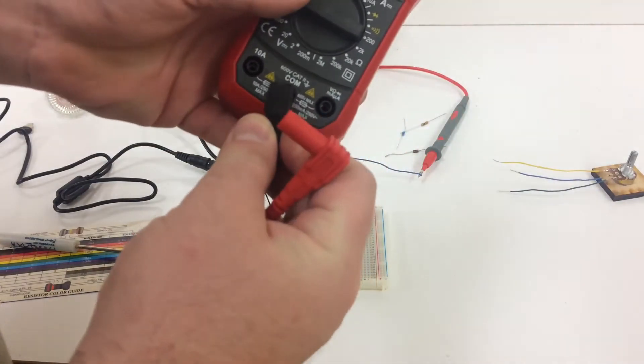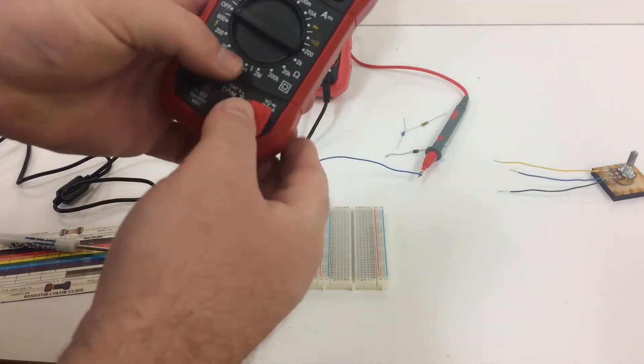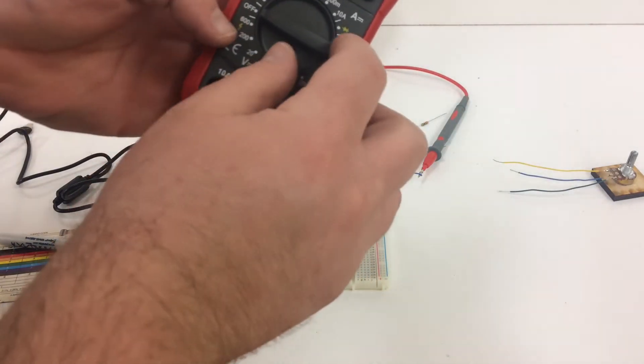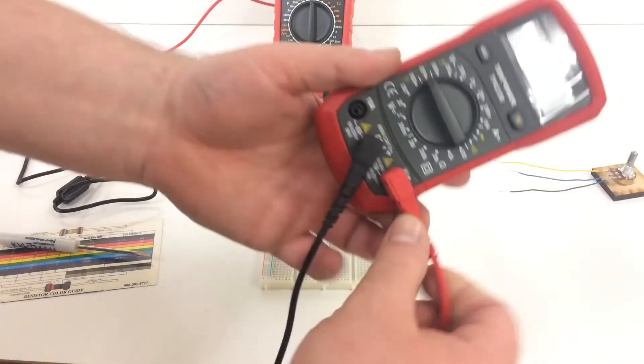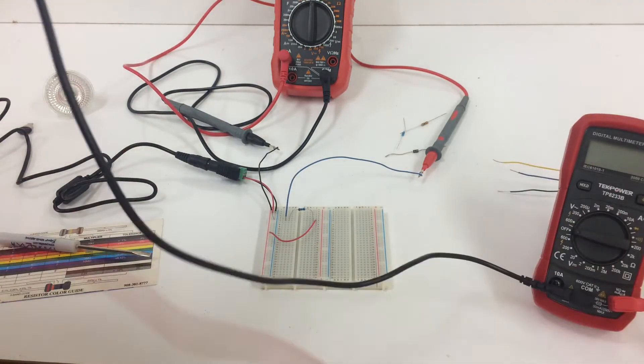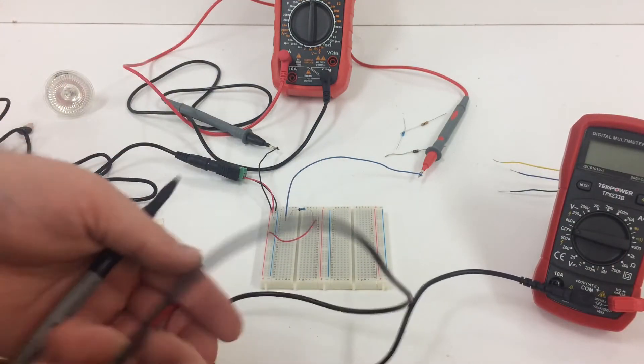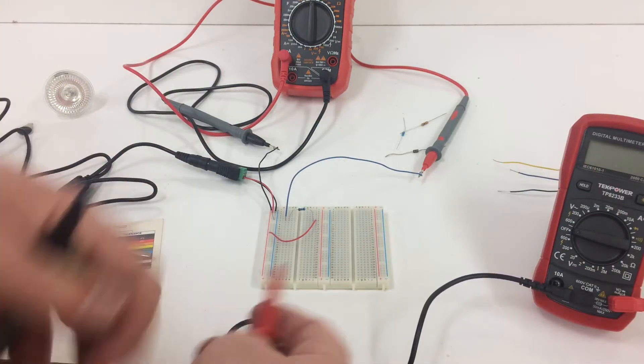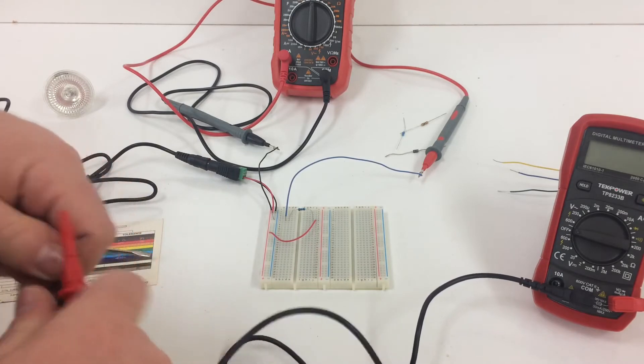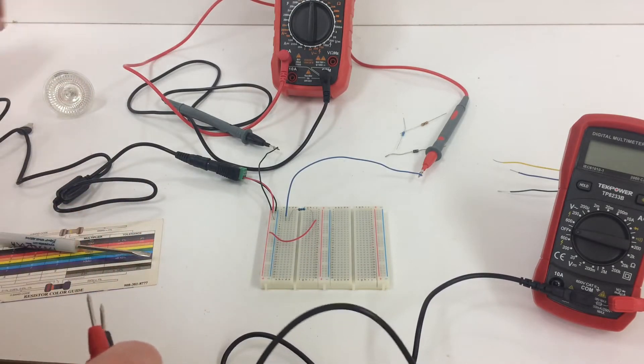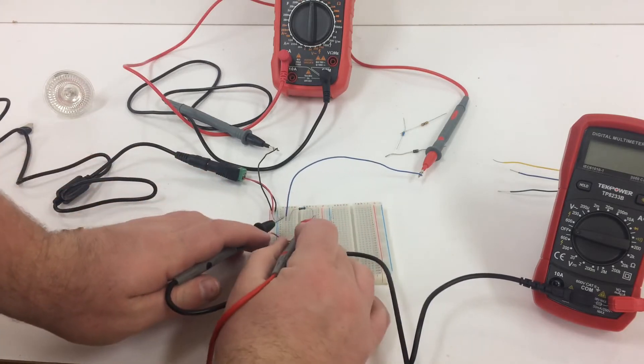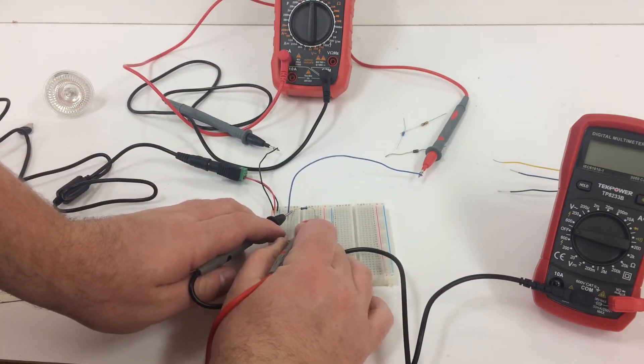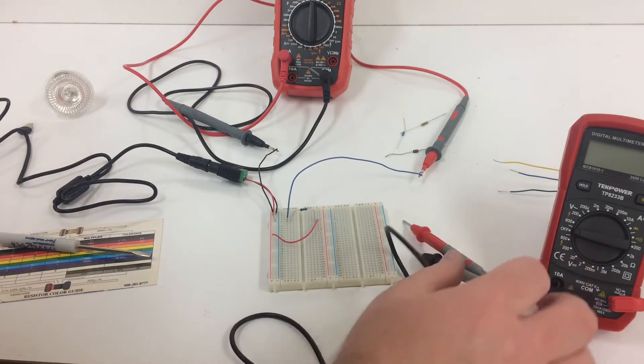I can take my other leads, com and voltage, and we will use these leads as a probe to probe for the voltage. So when we take our measurements, you can measure on each side of the resistor, and that will give you the voltage going through the resistor.